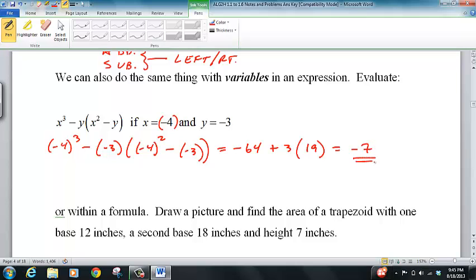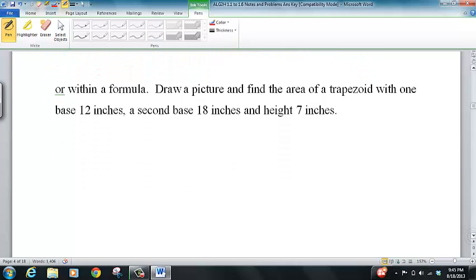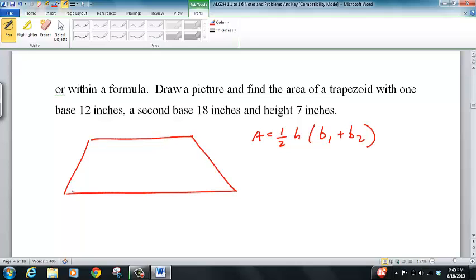You can also use this in a formula. The area for a trapezoid is - I'll draw your trapezoid. It says there's a base of twelve, a base of eighteen. You can just plug and chug. Twelve plus eighteen times one-half times seven. The area will give you 105.